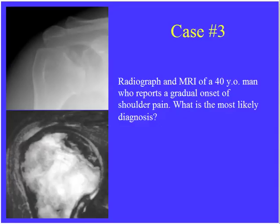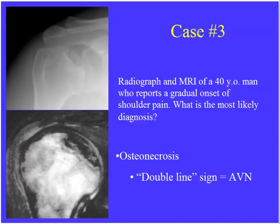A very common question from reviewing five years of in-service exams: a 40-year-old with gradual onset shoulder pain. We have a geographic area of subchondral abnormality within the humeral head. On T2-weighted image, a bright line with a parallel dark line — this is the double line sign, diagnostic of avascular necrosis. Whether in the humeral head, femoral head, talus, or patella, if you see a geographic well-defined area of signal abnormality with a parallel white and black line, this represents the granulation interface of avascular necrosis.